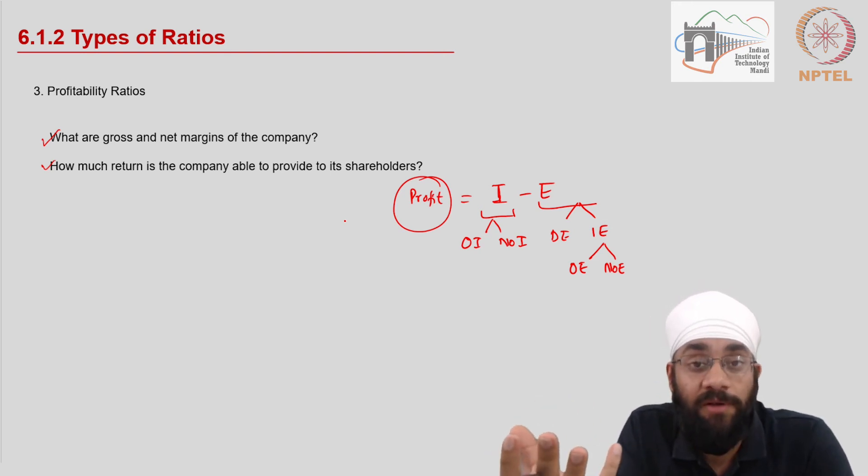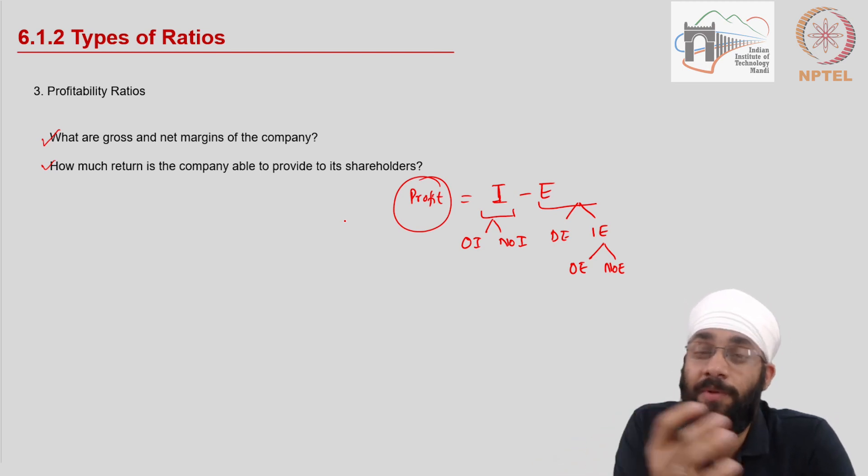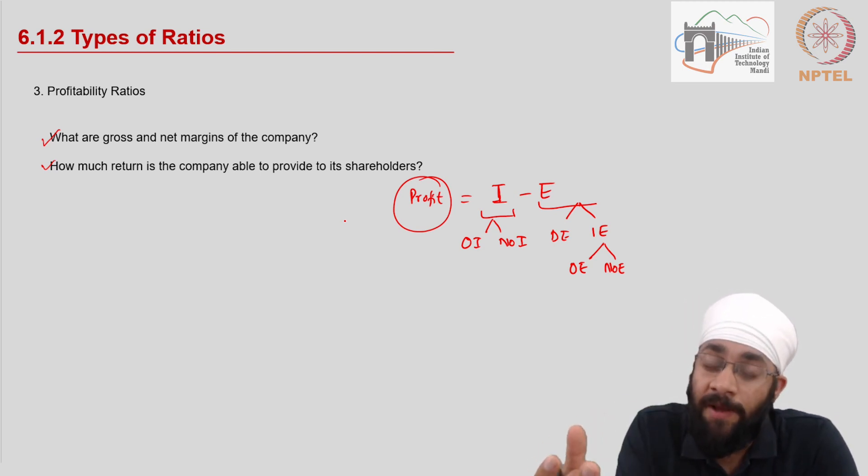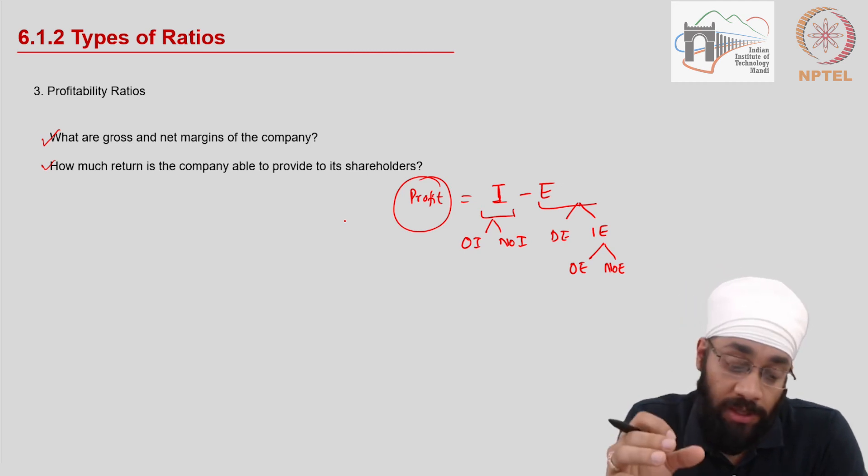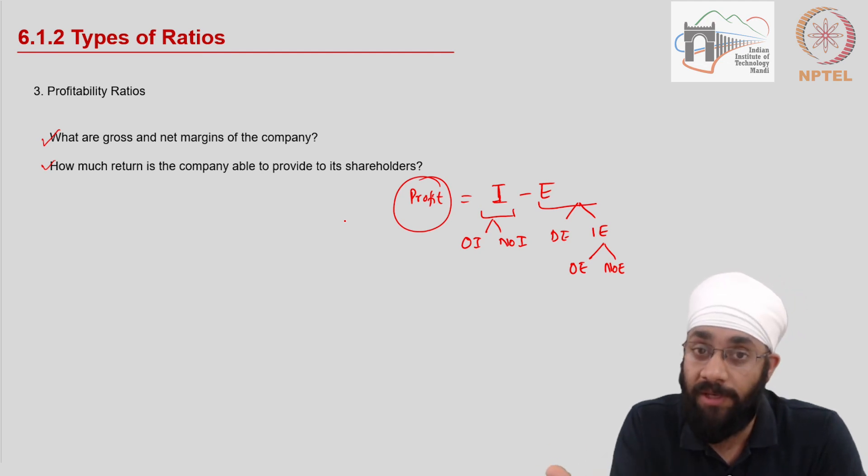Operating profit, which means only talk about operating income and operating expenses. So profitability ratios are going to be dealing with such kind of indicators which will help us understand the ability of the business to generate money, generate more resources given that some resources have been invested.